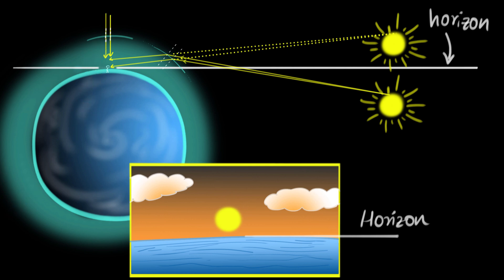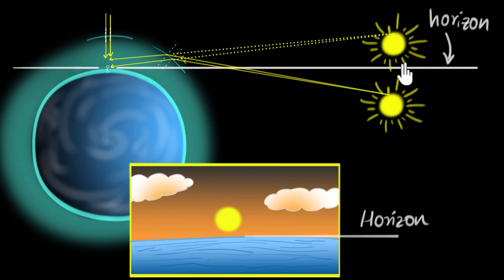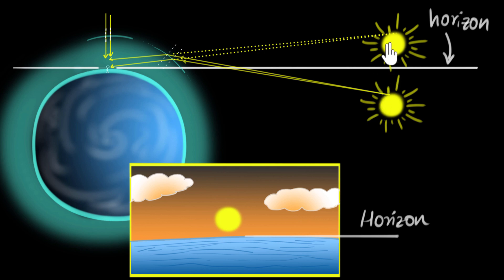This also explains why sailors in earlier times, who used the location of the stars to navigate, would not look at stars near the horizon for navigation — because stars close to the horizon have a huge shift in their position, and that would cause a huge error in their navigation.